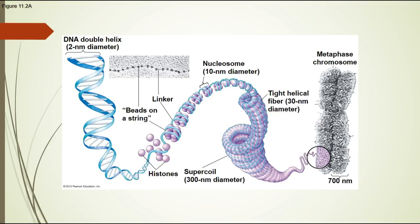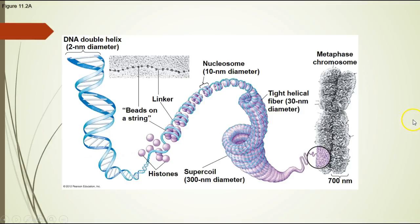Here's a picture showing what happens: the double helix is twisted and wrapped around histone proteins forming that beads-on-a-string appearance seen in the micrograph. They wind up into nucleosomes, then into a helical fiber, then into a super coil, which compacts even more tightly into the chromosome. So there are many different levels of DNA packing that occur.